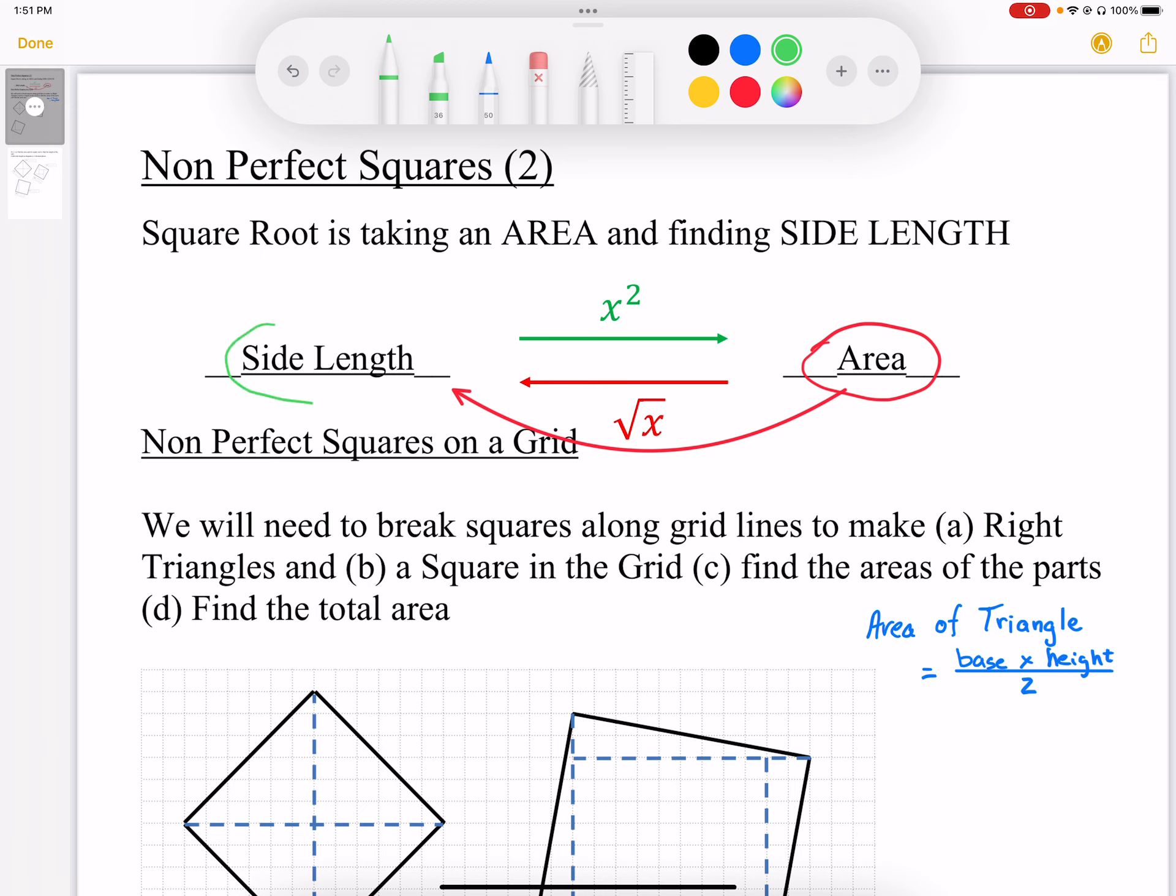Squaring starts with side length, and we are going to take squares and make squares, which gives us area. One way we find area, squaring finds area, square rooting finds side length.